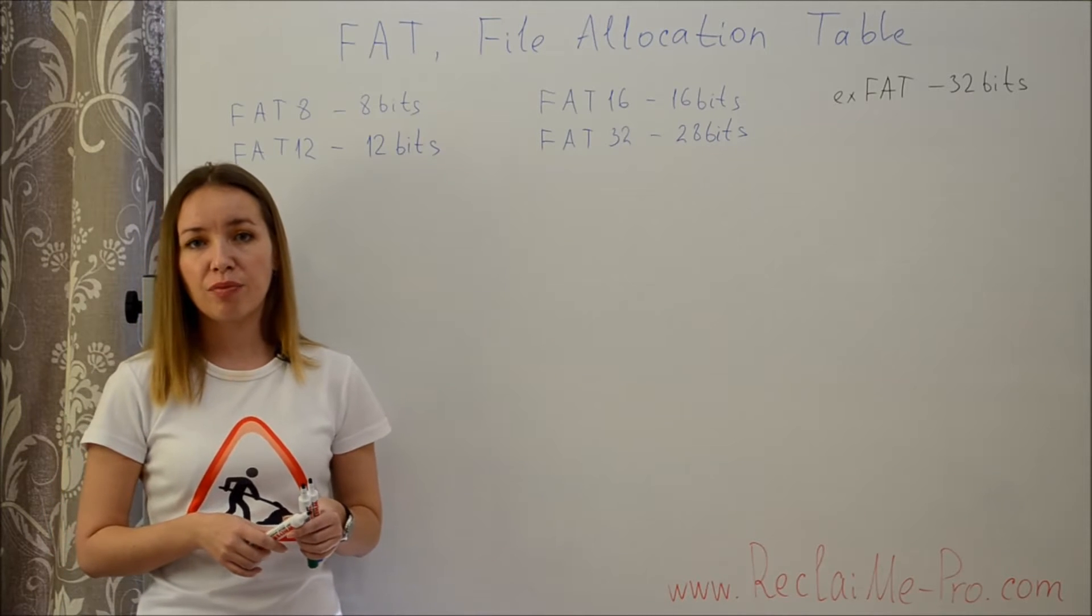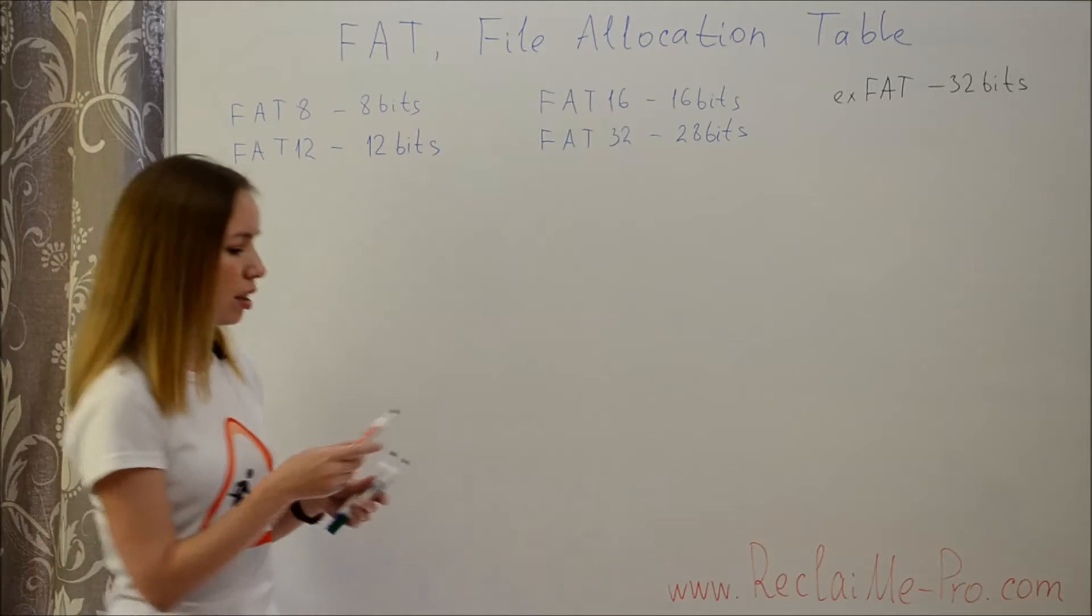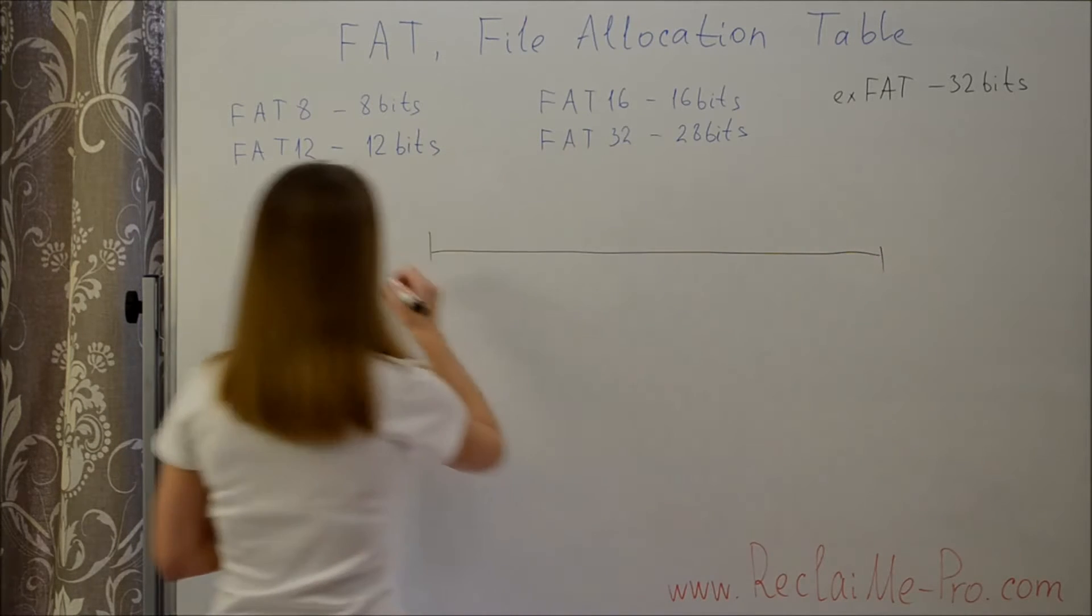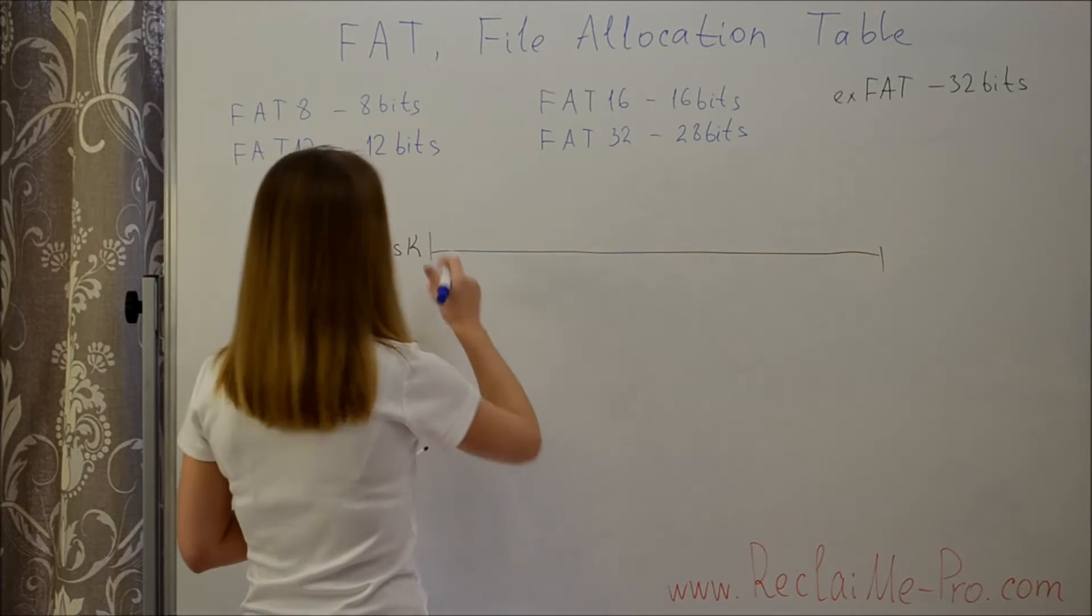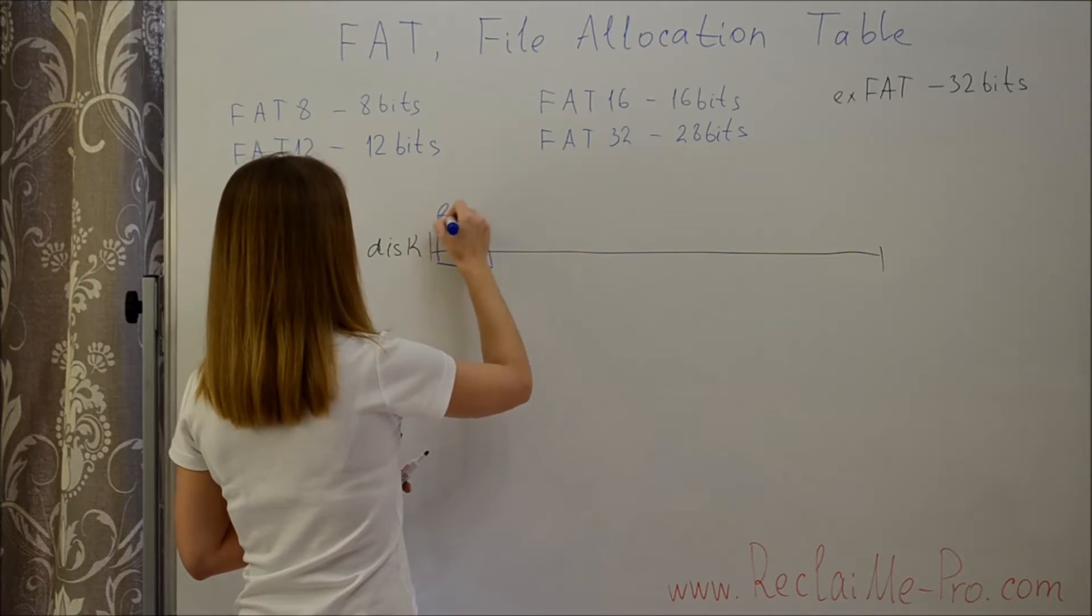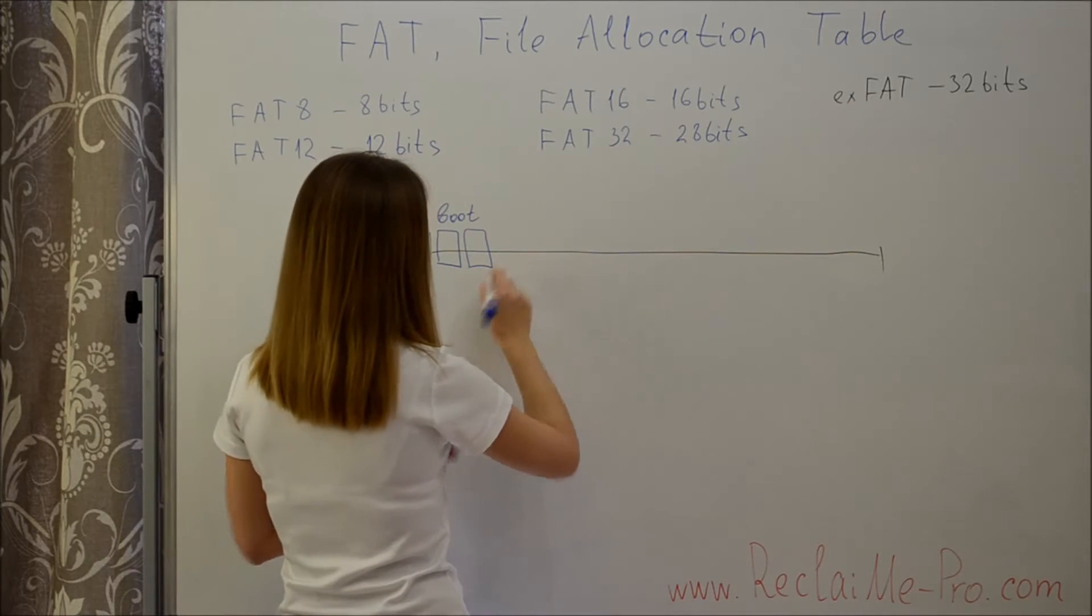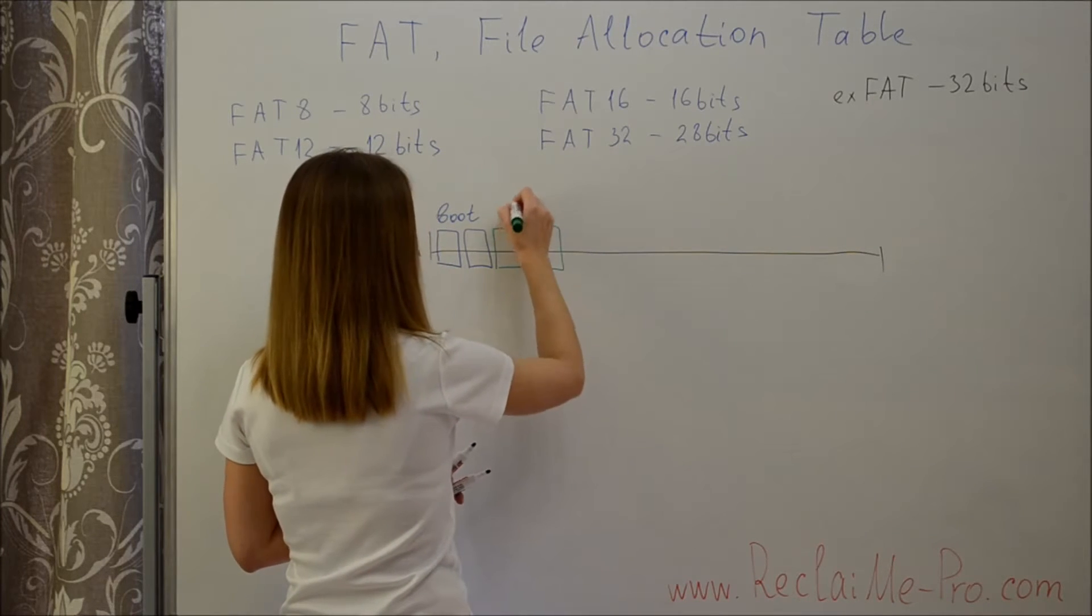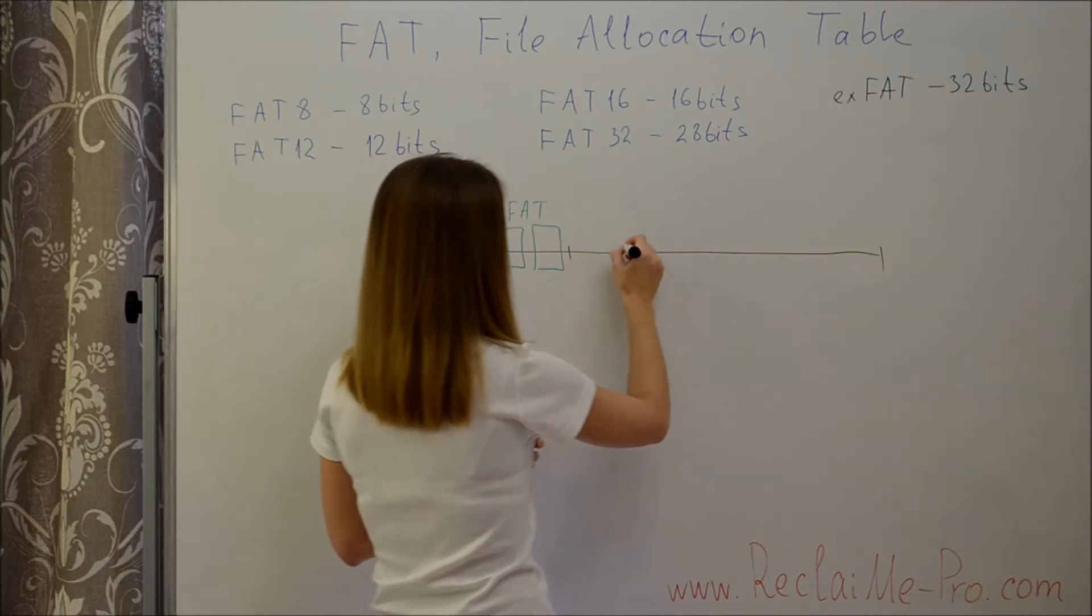As for inner FAT structure, all FAT versions create the volume in about the same way. Let's illustrate. We have a physical disk. In the beginning, boot sectors go. Then there are one or several FAT tables, and then the data area divided into clusters.